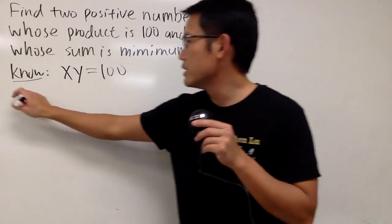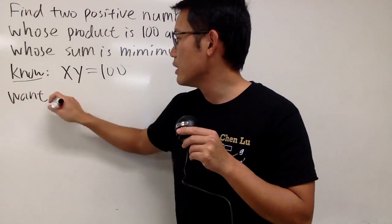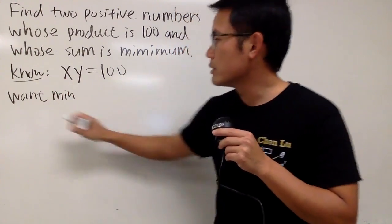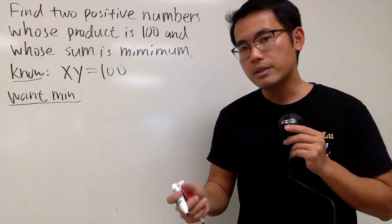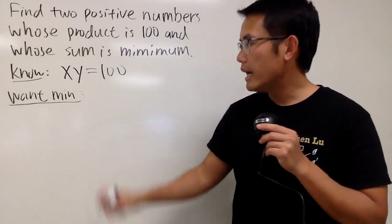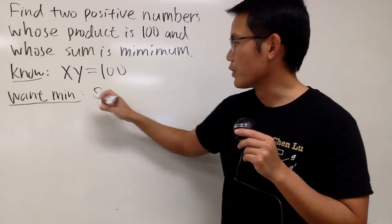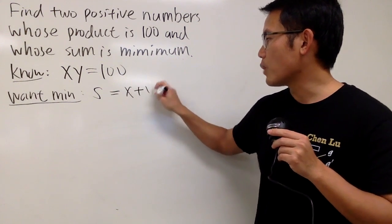So we know x times y will give us 100. And then the second line says this is what we are going to know. We want the minimum of their sum. Well, that's just simply x plus y, and I will just call that to be S for the sum. And this is going to be x plus y.